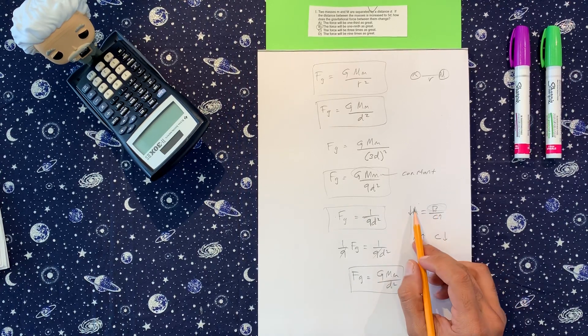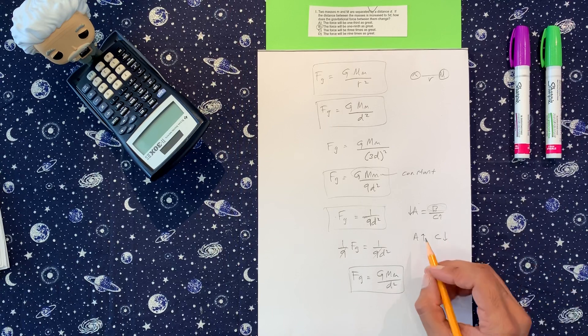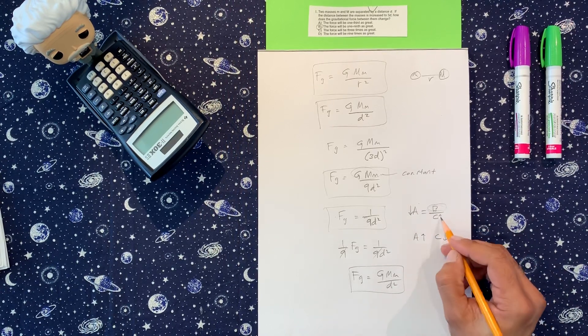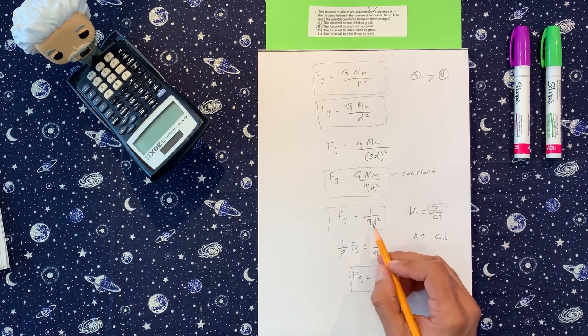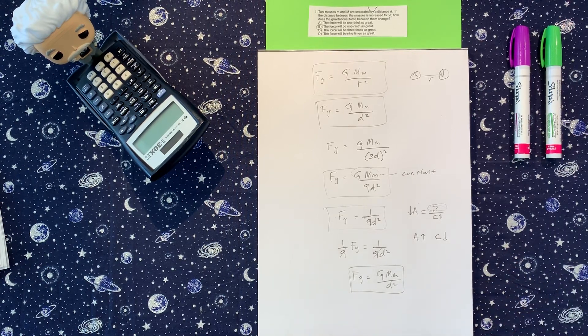So just try to remember that if you have reciprocals like this, then they're opposite. One side goes up, the other side on the bottom needs to go down to balance out the equation. Okay, that's it for us.